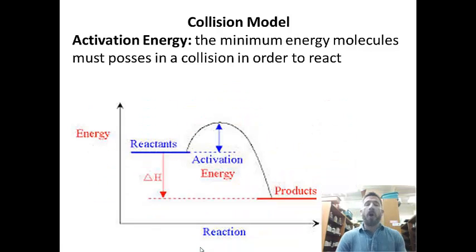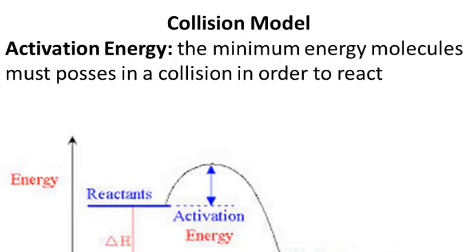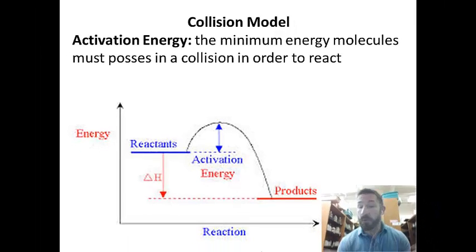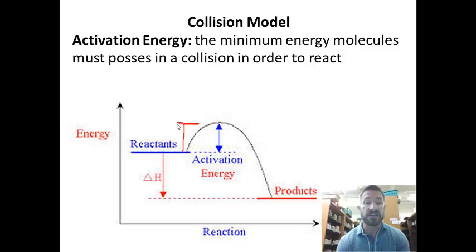Let's continue. A big part of whether or not you have an effective collision is the idea of activation energy. Activation energy is that minimum energy molecules must possess in order for a collision to occur. How do we find that? If you look at a chart that has that, remember, activation energy is a place when you go from reactants to the top of the hill. So that is what we call the activation energy, which is sometimes abbreviated E sub A.